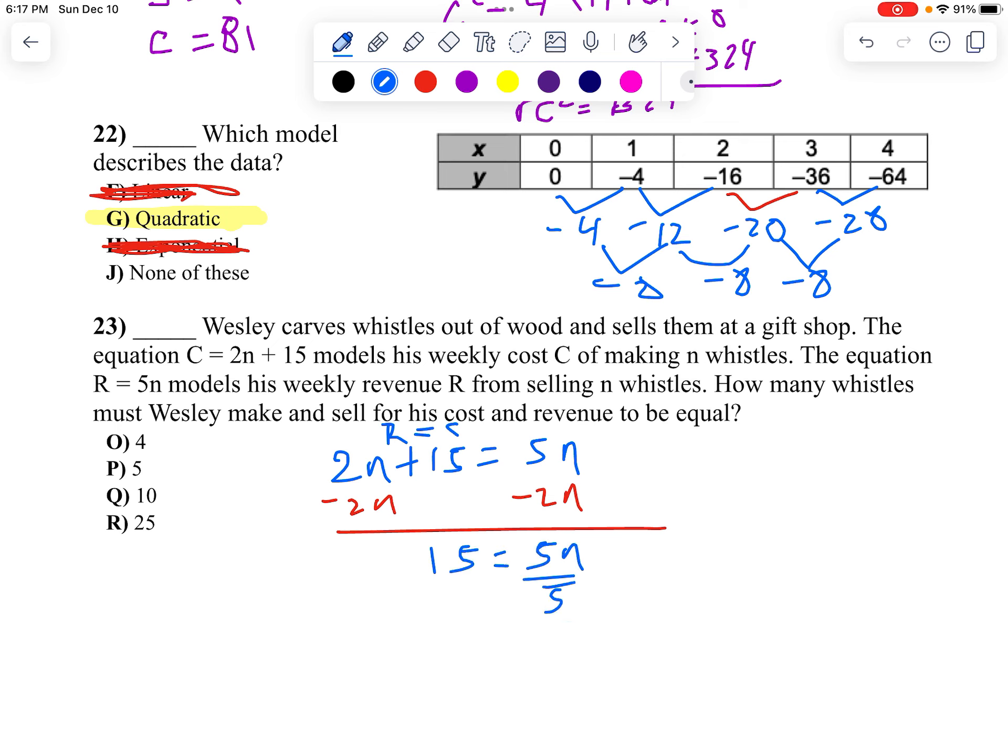We'll divide by 5. Oh, 5 minus 2 is not 5. I made a mistake. 5 minus 2 is 3. So I divide by 3. n is 5. There we go. That is a choice.